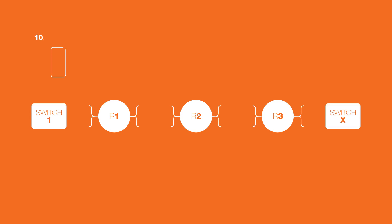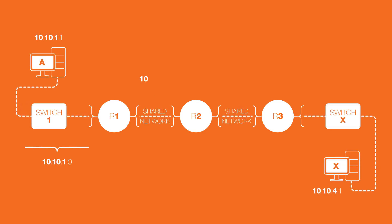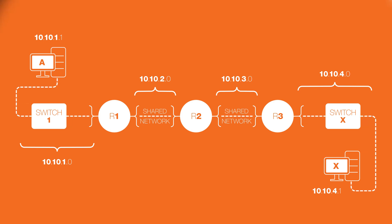In this story, Host A's default gateway looks in its routing table and sees that the next router interface the packet should go to is the left interface of R2.